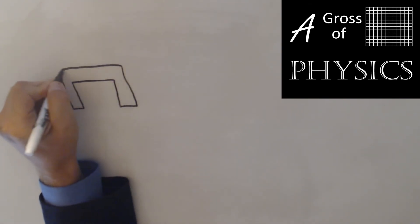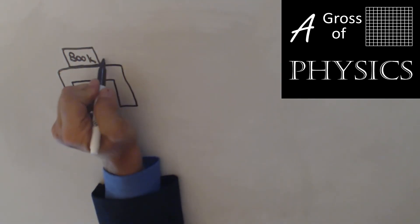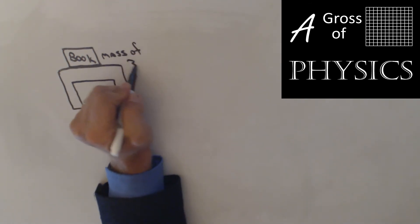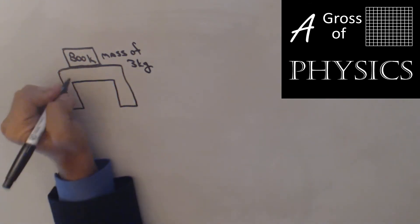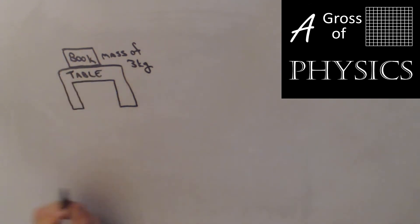I'd like to do a sample Newton's third law problem now. And what we're going to look at is a table that has a book resting on it. And the book, let's say the book has a mass of three kilograms. And we want to discuss the action-reaction pair of the book and the table. So we have a book on a table. And I know I always have to label my drawings because they are not all that good.